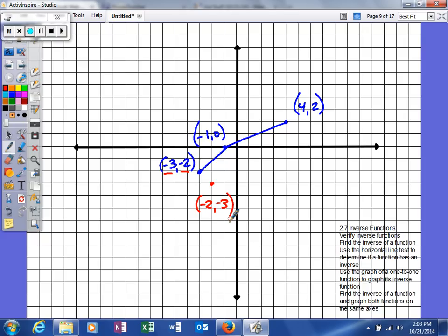If you take the next ordered pair, negative 1 comma 0, its inverse will be 0 comma negative 1.